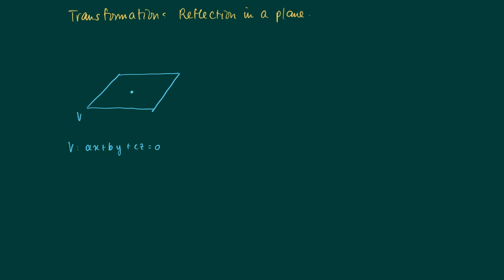Now look at the transformation which is a reflection in a plane. Here we have a plane V given in general formulation as ax + by + cz = 0. Now choose a unit normal vector: as the normal we choose the vector with coordinates a, b, c, and normalize it by dividing by its length — the square root of a² + b² + c². Drawing the normal vector for this plane, we get a picture with a vector u of length 1.